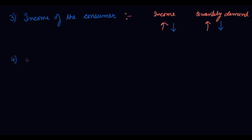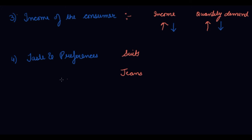The fourth factor affecting demand is taste and preferences. In earlier times, people in metropolitan cities preferred wearing suits, but as westernization and modernization came into Indian society, tastes shifted from suits to jeans and western wear. Taking the example of suits and jeans — the demand for suits has reduced while the demand for western wear has increased.